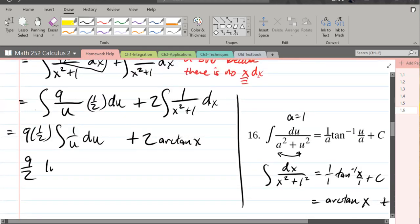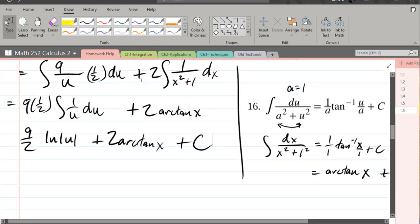So 9 over 2 ln absolute value u plus 2 arctan x. You only need one plus constant. So I'm just going to go ahead and throw it right there. Usually I wait. You could do your plus constant up here. But generally, I like to wait until my last integral has been taken care of, and then I'll write my plus C. So this should be the answer here.